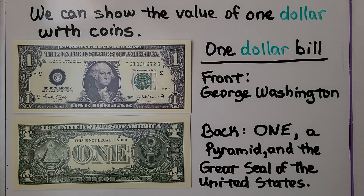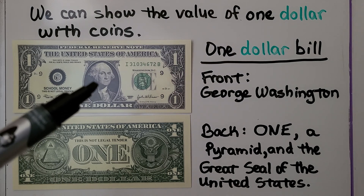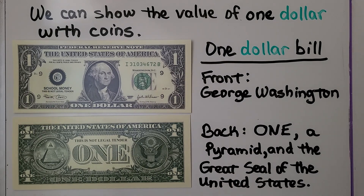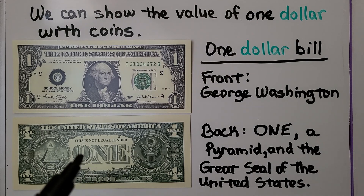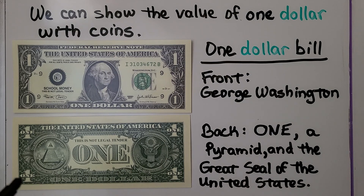We can show the value of $1 with coins. So this is a dollar bill — here's the front and it's got George Washington on the front. Mine says 'school money' because this is fake money to teach with. On the back, we can see there's a pyramid. There's a giant one written here to tell us it's $1, and right here is the great seal of the United States. Notice how in the corners it's got a one because it's a $1 bill.